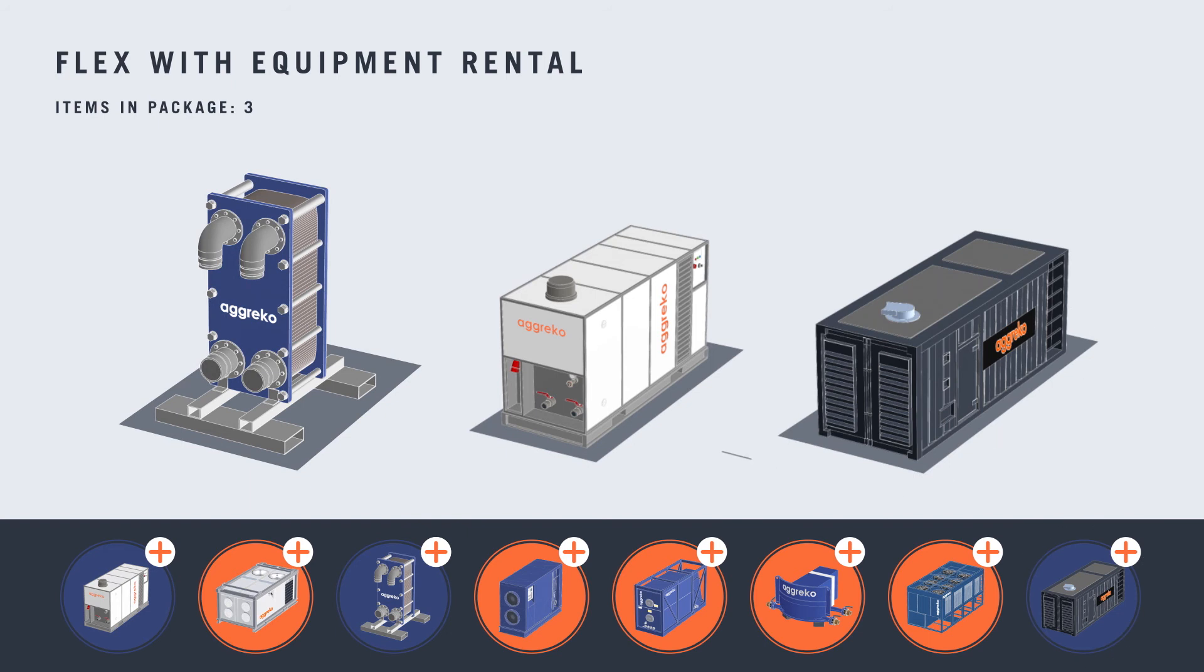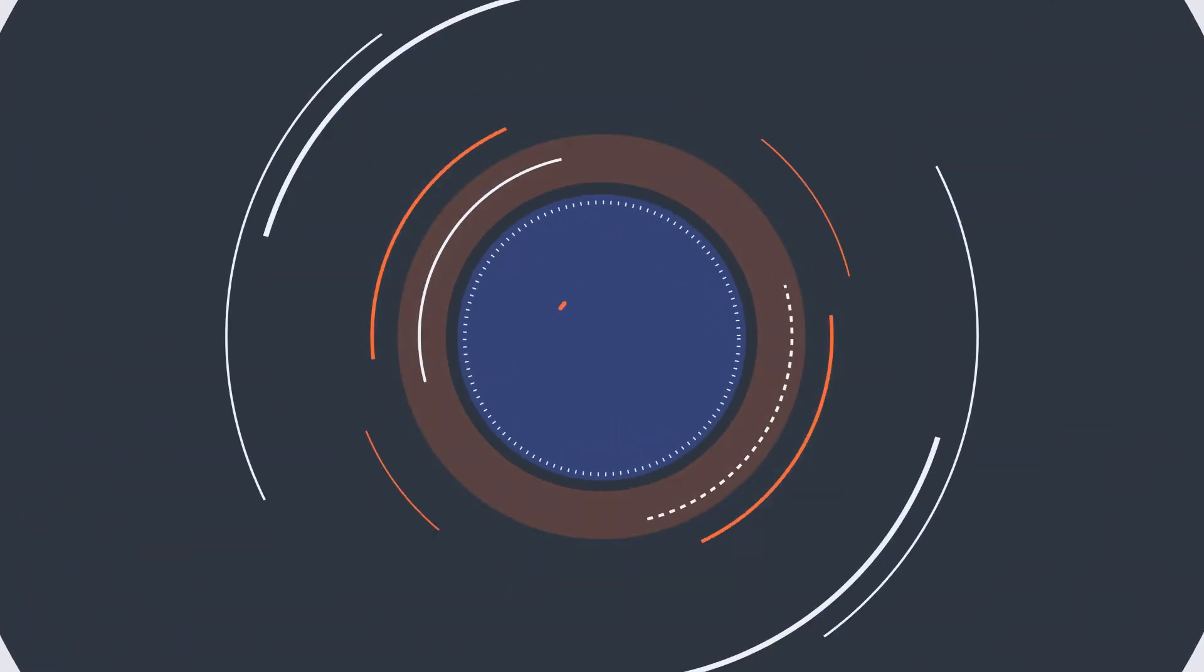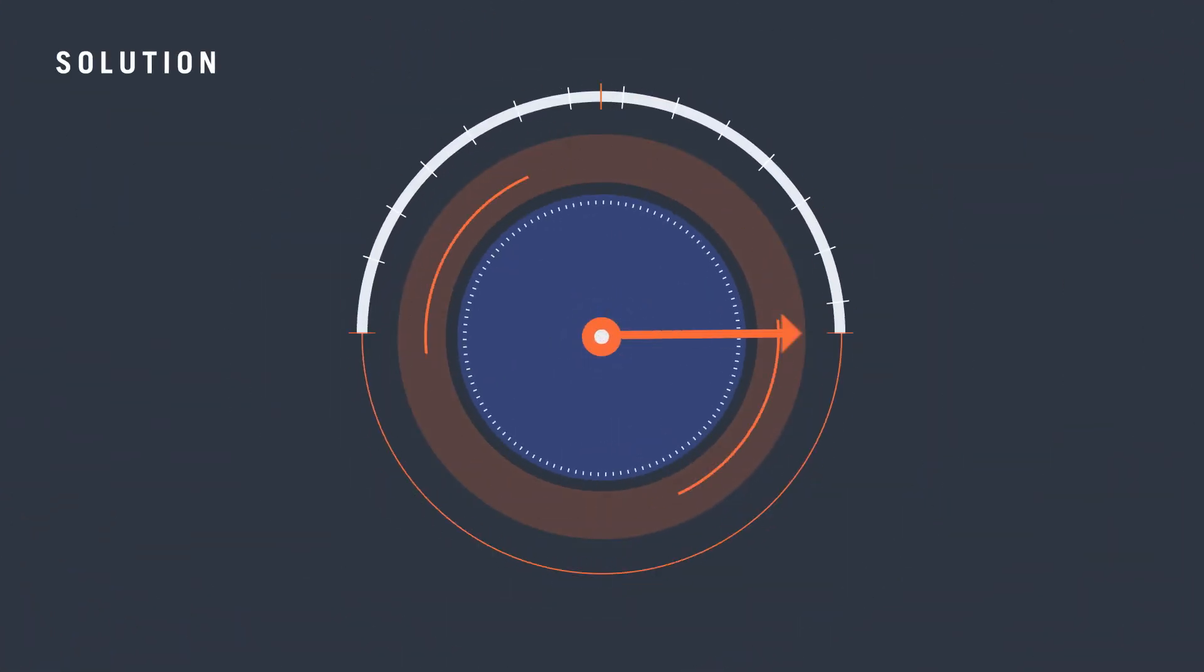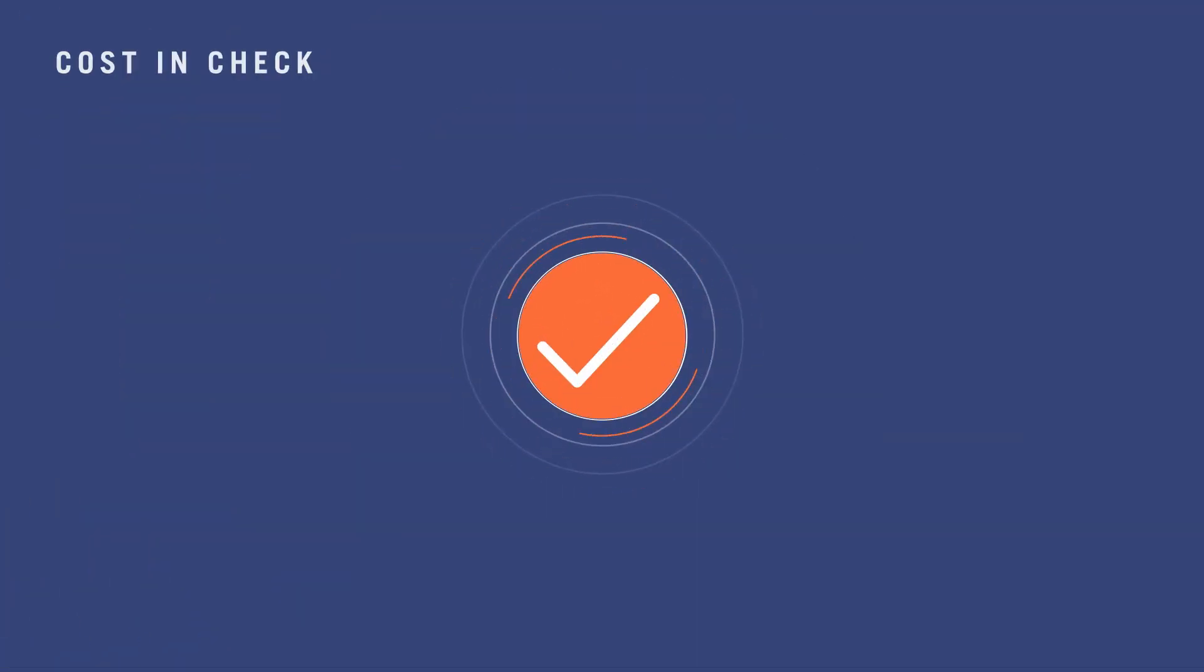Whether you need to add a generator during periods of peak production or swap out boilers for chillers to control the growth process, we can offer a solution that will keep losses to a minimum, optimize your productivity and keep costs in check.